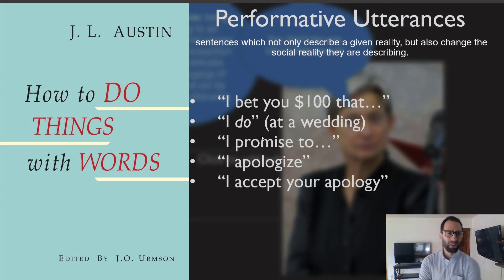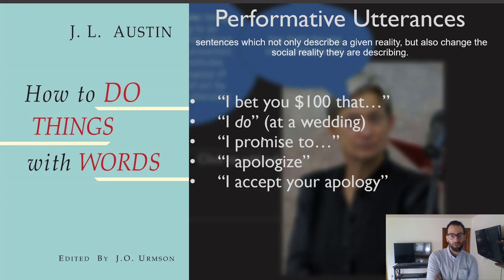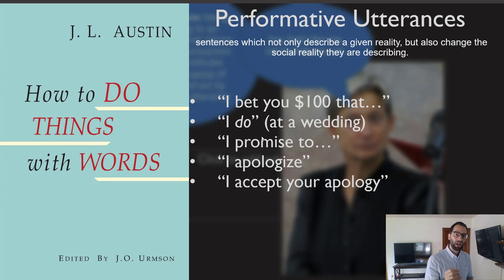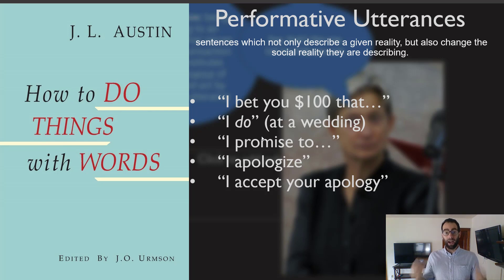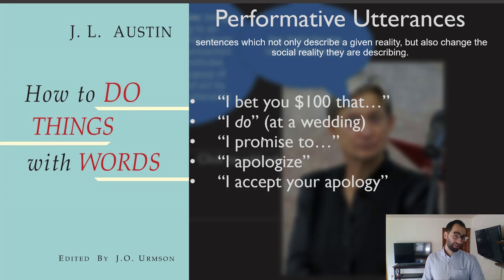What's an example of a performative utterance for Austin? Things like: 'I bet you $100 that I can make this basket.' In saying that sentence, you are in fact doing the action that we call betting. Or saying 'I do' at a wedding — it's not just a description of my feeling, it also is itself an act that authorizes the action of getting married. Or, my favorite example: 'I promise to.' When I say the words 'I promise to,' I am in fact doing the action that we call promising. There is no way to distinguish between the action of promising in the world and the speech act of saying 'I promise to.' A simpler example might be 'I apologize' — when you say that, you are in fact doing the action called apologizing. Or even 'I accept your apology' — the action of accepting one's apology is indistinct from the speech act itself.